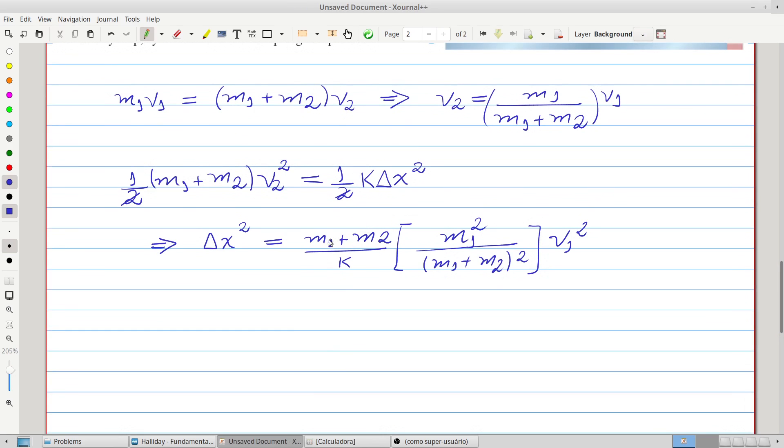And here we can cancel this, with this, therefore we will have, M1 squared, divided by K,